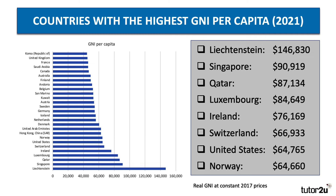These are the countries in the world with the highest gross national income. Liechtenstein is way out in front, but it's a very small principality. In terms of sizable countries, Singapore, Qatar, Ireland, Switzerland, the United States and Norway figure in the top nations for GNI per capita. The UK comes in at a GNI of around $45,000 per capita — you can just see it at the top of the chart, just ahead of South Korea.